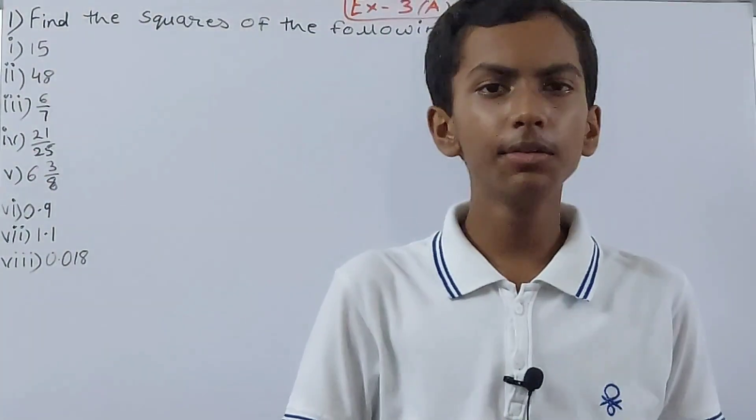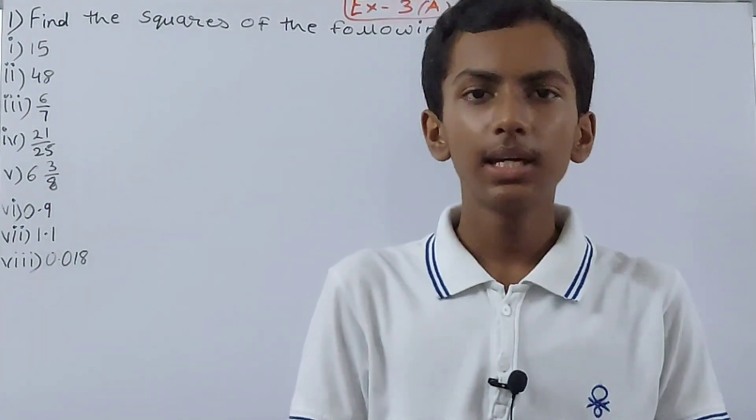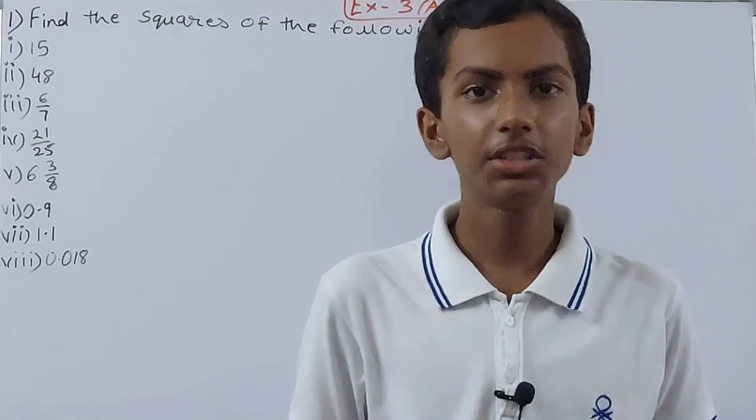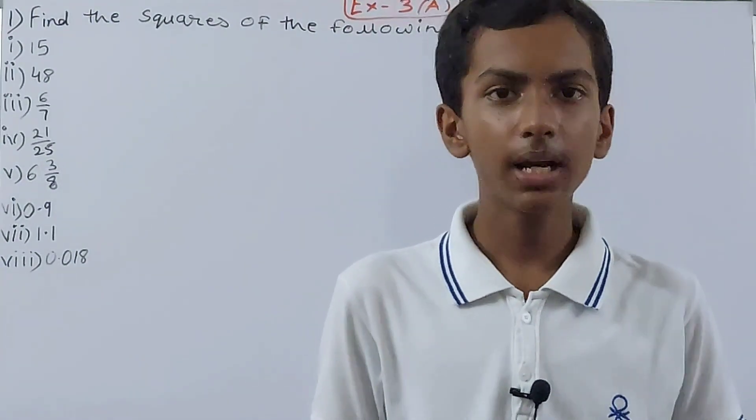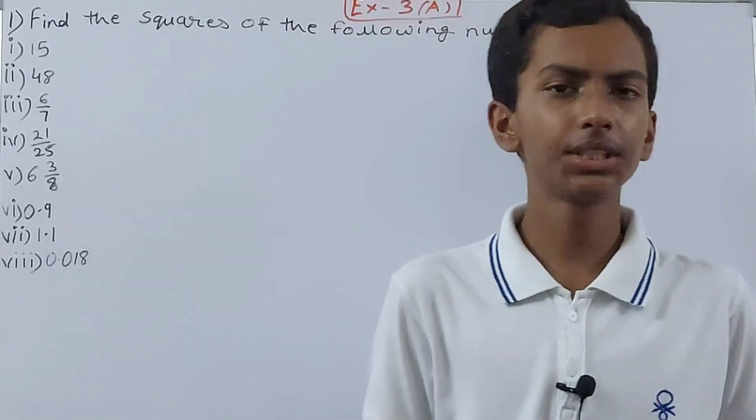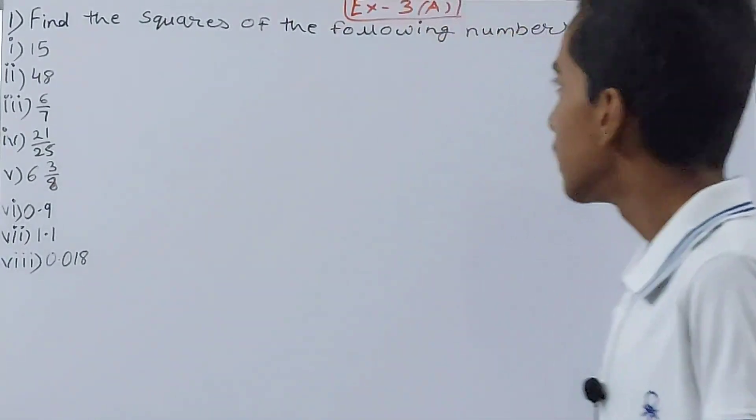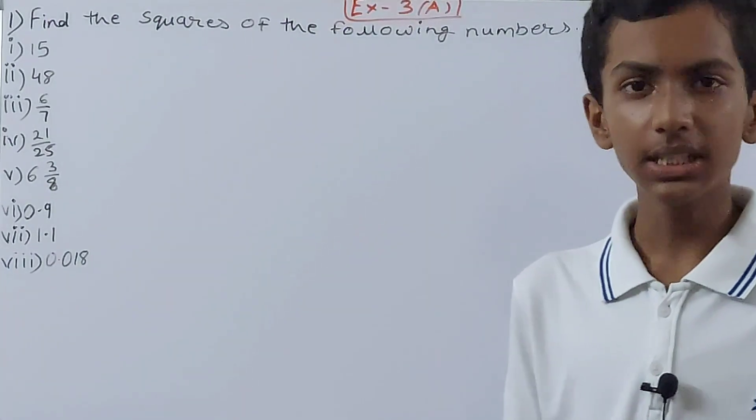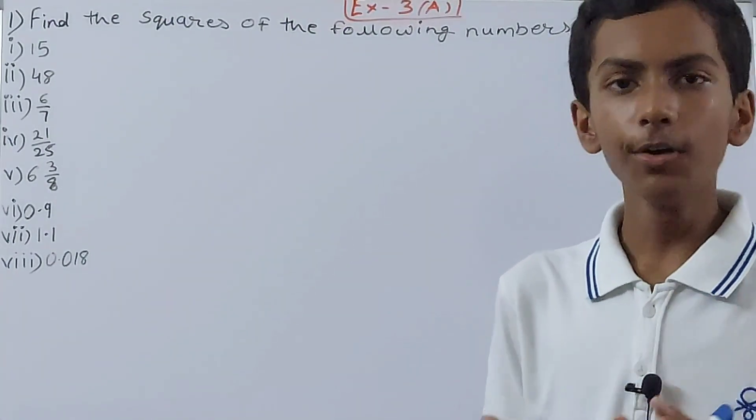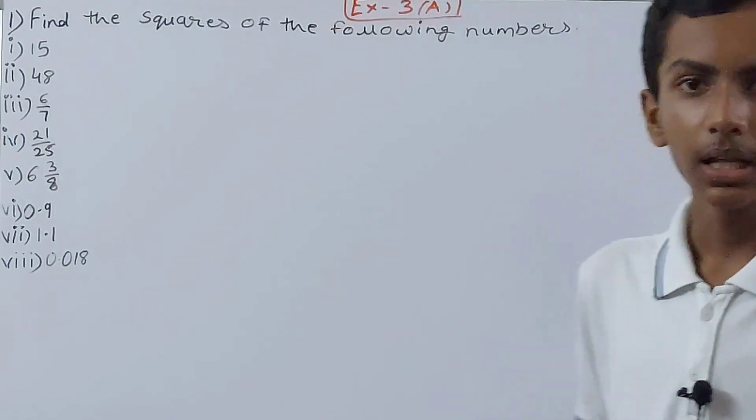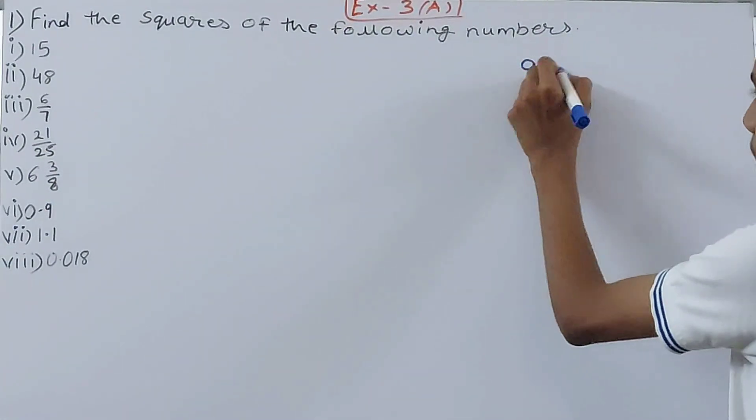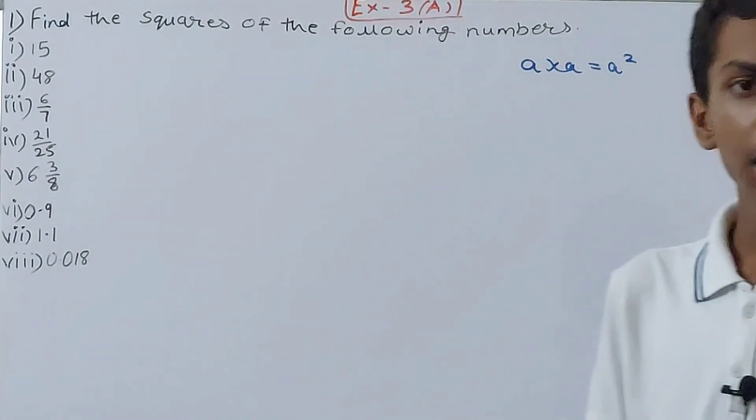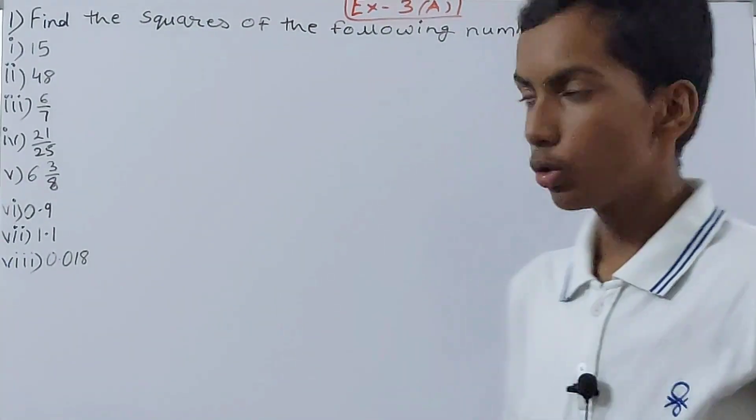Hello friends, welcome back to my YouTube channel Unlock Your Learning. In this video we are going to solve IJS Mathematics Class 8 Chapter 3 Square and Square Roots Exercise 3A Question 1. This is find the squares of the following numbers. We already know what squares are - if I have a, then a into a means a squared, right? Multiplying a number by itself.